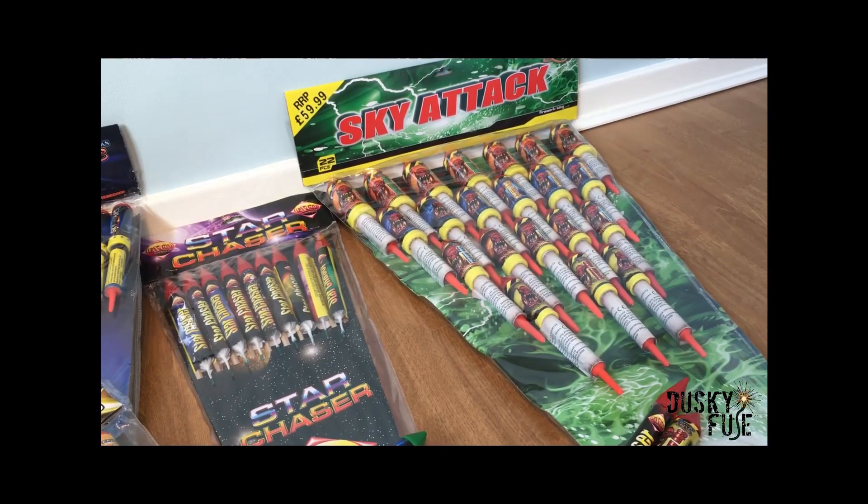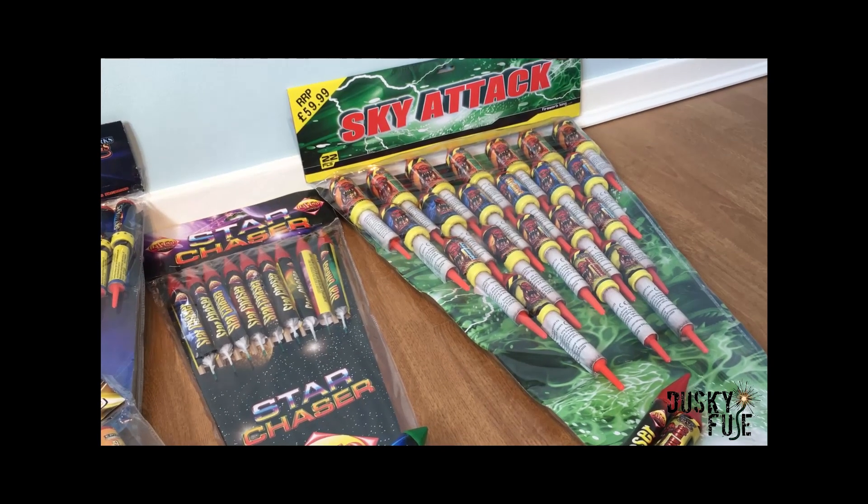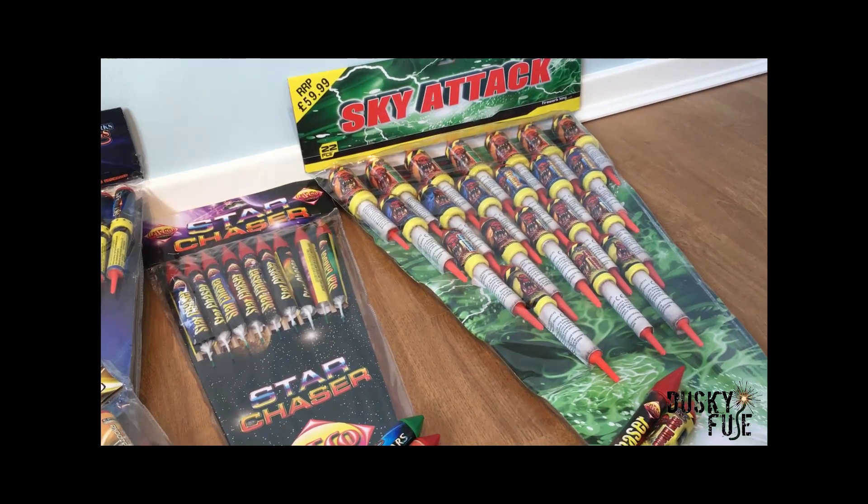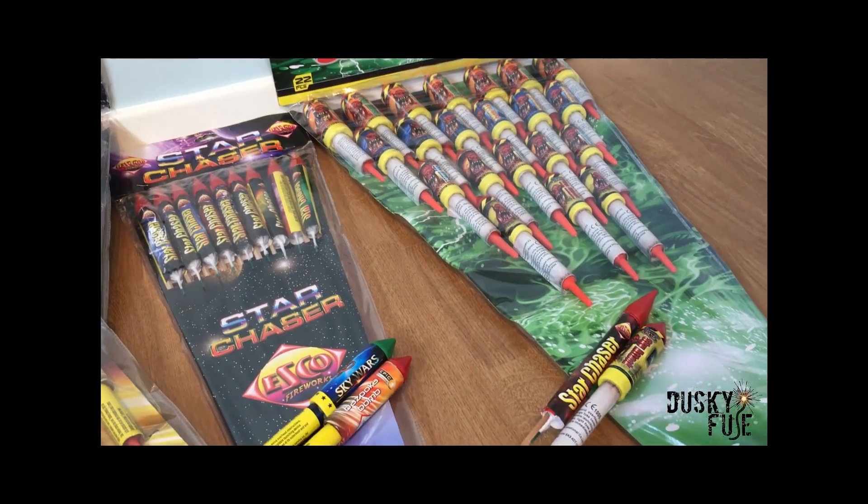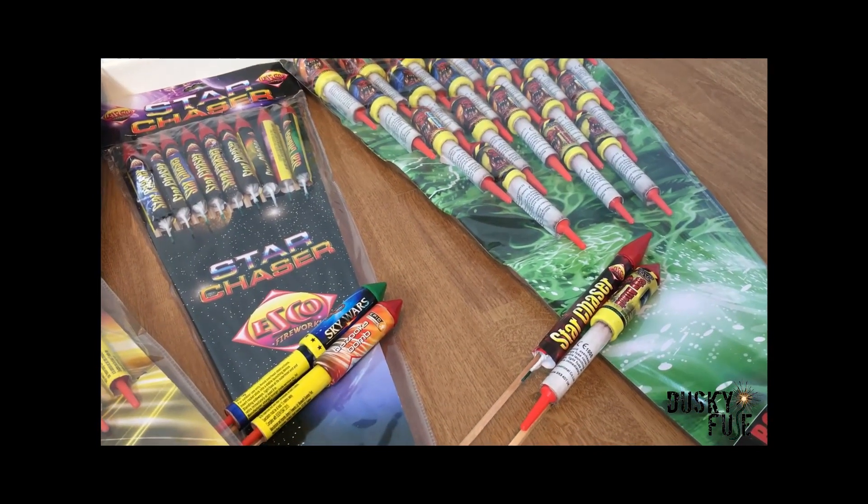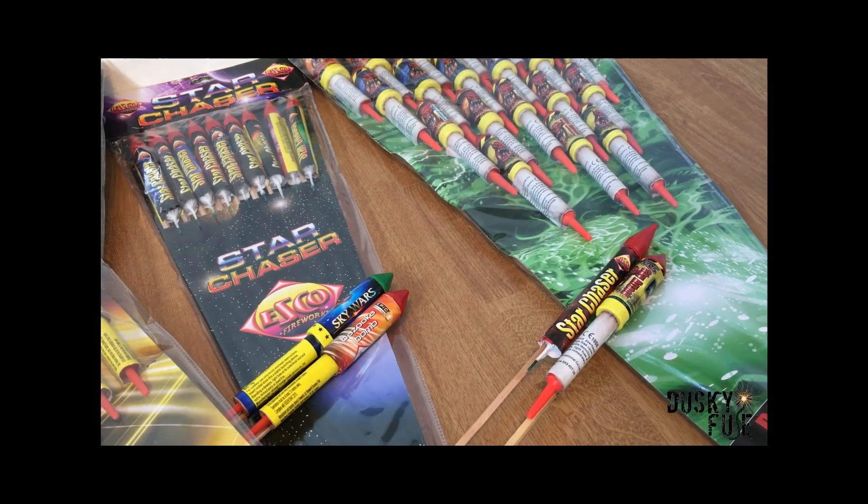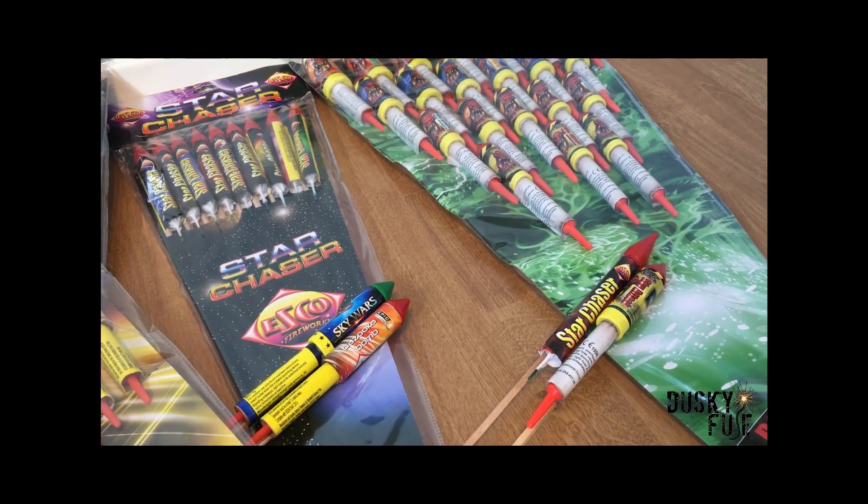For the purpose of this video we're looking at rockets, and that's because 1.4G rockets have always been considered substandard. The reason for this is because of the restrictions on the powder content. A 1.4G rocket can only have up to 20 grams of powder.